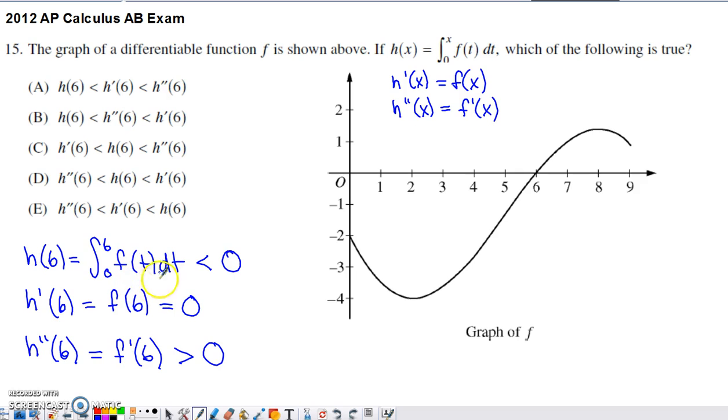So by definition, a definite integral corresponds to an exact signed area. So the value of this is going to be all of this space right here. That space from 0 to 6 is entirely below the x-axis, and therefore, that's got to be a negative value.